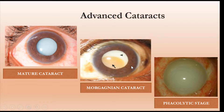If you leave it even at the Morgagnian stage, this cortical matter diffuses into the anterior chamber and we reach a phacolytic stage. In spite of outreach and all the educational efforts we propose, we still have cases like this presenting — almost 2 to 3 cases every week — and it is not rare to see phacolytic cases.